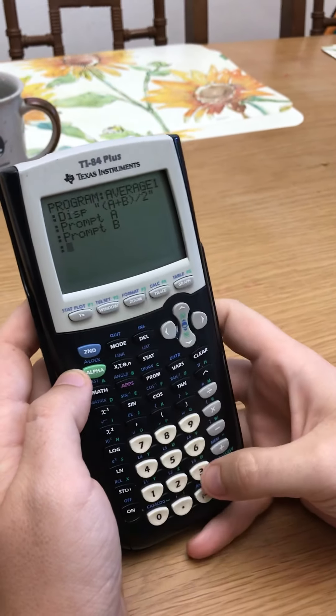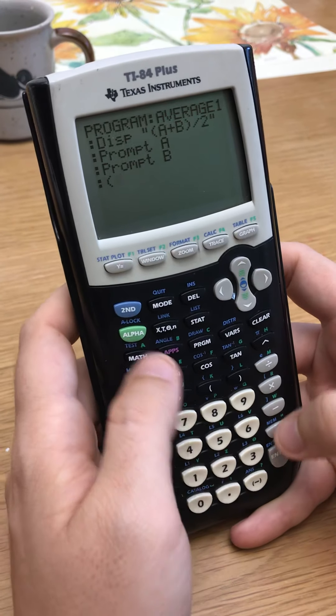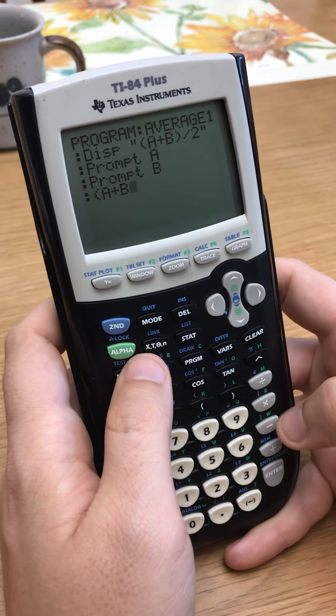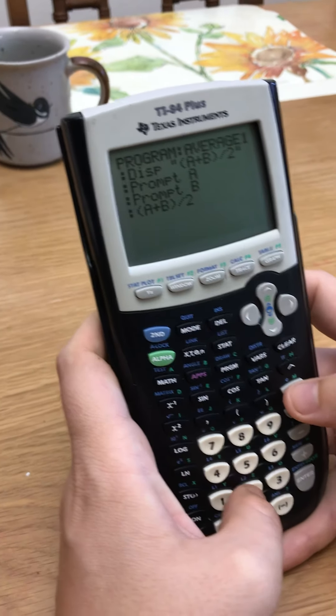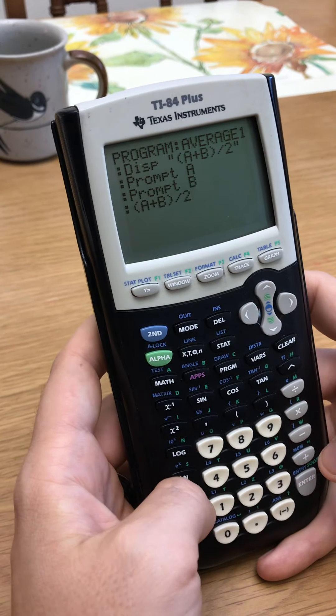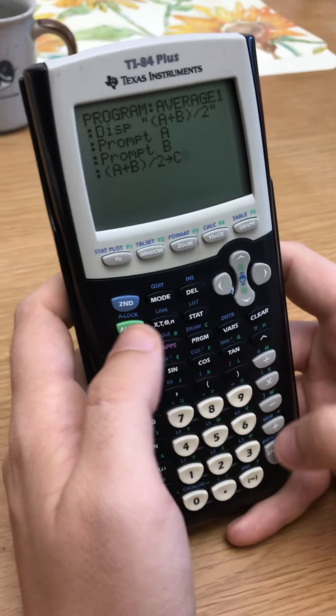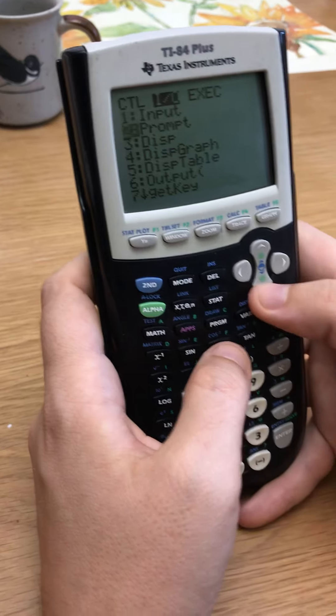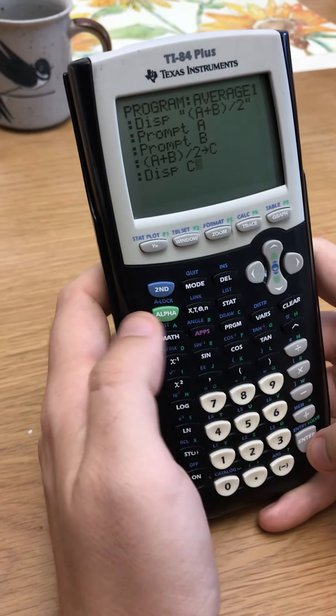So I've got step one, display. Step two, input or prompt. Step three, execute. So I'm actually just going to do the same exact thing as I did in my display. I'm going to just type in A, since I used the same letters, I'm just going to do the same exact thing. A plus B over two. That takes the average of two things. And then I want to store that as some other variable. I can't use A or B. I can use any other letter. Let's do C. And then step four, program, display, and I want to display the answer. And there you go. That's it.